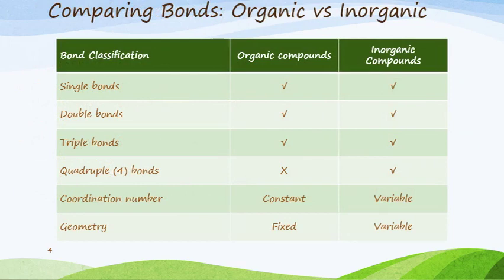Let's compare bonds in organic chemistry versus inorganic chemistry. We get single bonds, double bonds, and triple bonds in both organic and inorganic compounds. We don't normally find bonds higher than that in organic chemistry, but in inorganic chemistry we do get quadruple bonds — four bonds. The coordination number is pretty constant for organic compounds and the geometry is fixed, while for inorganic compounds the coordination number varies and the geometry is also variable.